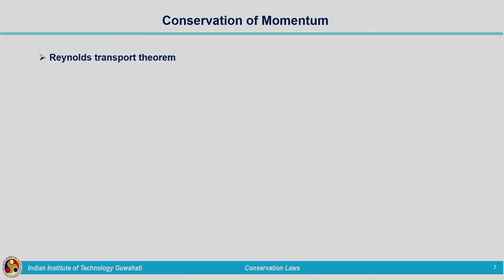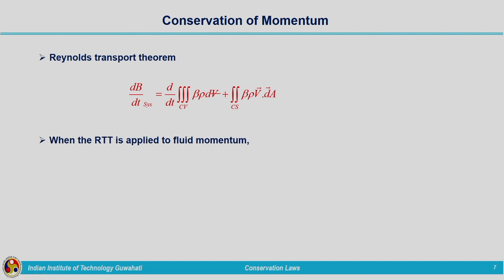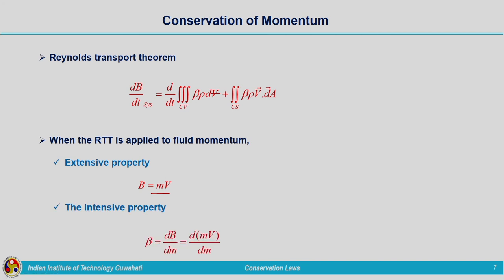Now we can make use of Reynolds transport theorem for deriving the equation corresponding to conservation of momentum. I am again repeating the equation corresponding to Reynolds transport theorem, and now we need to have an idea about the extensive and intensive properties in the case of momentum. When Reynolds transport theorem is applied to fluid momentum, our extensive property B is mv — that is, momentum of fluid flow.